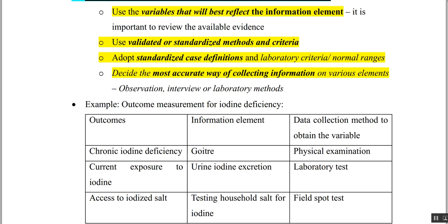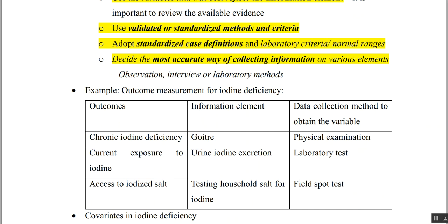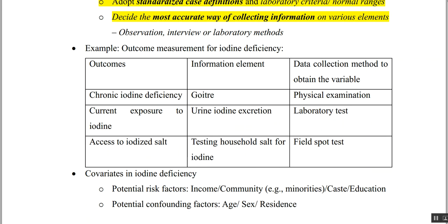For example, in outcome measurement for iodine deficiency: if the outcome is chronic iodine deficiency, the information needed is who develops goiter, and the data collection method is physical examination. If the outcome is current exposure to iodine, you check whether iodine is present in urine using a laboratory test. If you want to check how many people have access to iodized salt, you check household salt for iodine using a field spot test.